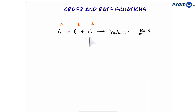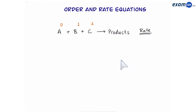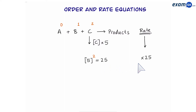Let's look at C, and see what happens when we have a second order reactant. We're going to double the concentration of C. Two to the power of two equals four, so the rate will times by four. This is squared of what happened to C. We multiplied C's concentration by two, and the rate was squared. Here's another example: if we times the concentration of C by five, five to the power of two equals 25. So the rate will become 25 times faster — again, squared.